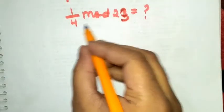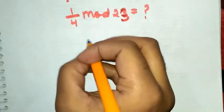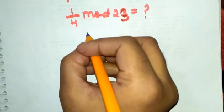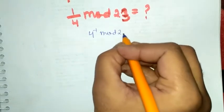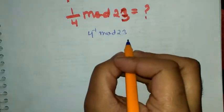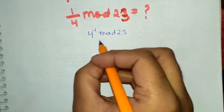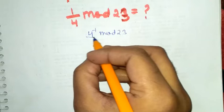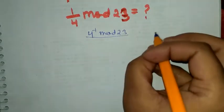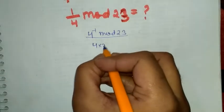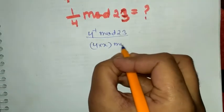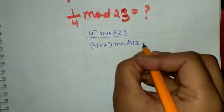So let's solve the value of 1 by 4 mod 23. We can write this term as 4 inverse mod 23. For calculating this type of term, we use 4 into x mod 23 equals to 1.